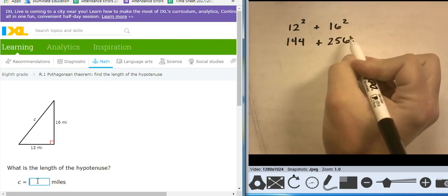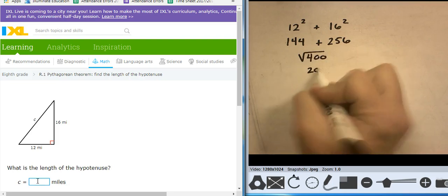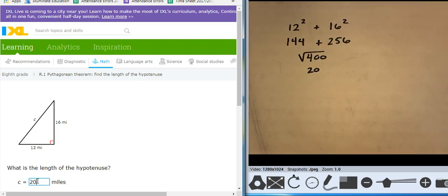Add those two numbers together, and I'm going to get 400. I'm going to take the square root of 400. That's going to be 20. So that missing side, the hypotenuse, is 20.